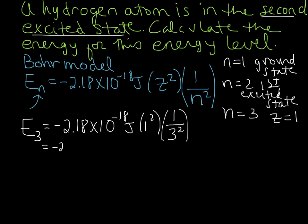So that's going to give us negative 2.18 times 10 to the negative 18 joules, 1 squared is still 1, so now I'm going to drop that off, and we're going to end up with 1 over 9. So when you multiply those two guys together, then you are going to end up with negative 2.42 times 10 to the negative 19 joules.